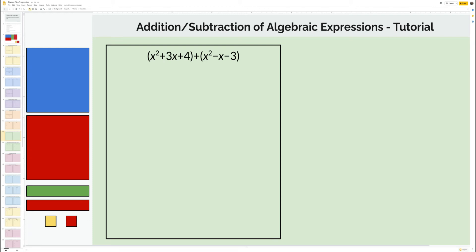Let's take a look at addition and subtraction of algebraic expressions. Here we have x squared: 1x squared plus 3 positive x's, and then plus 4.